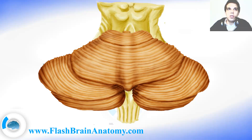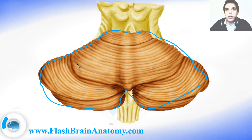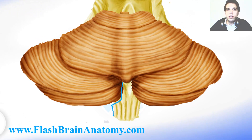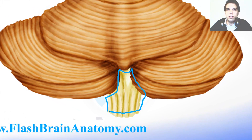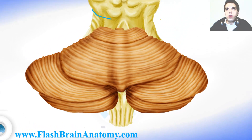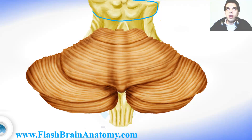This brown structure is called the cerebellum, or the small brain. This over here is the medulla oblongata, and this part up there is already the mesencephalon, or midbrain.